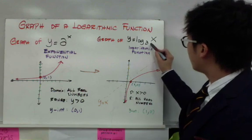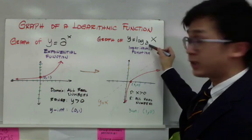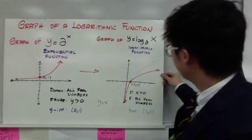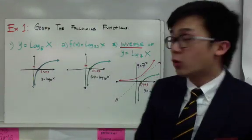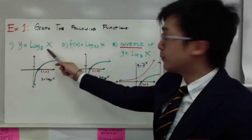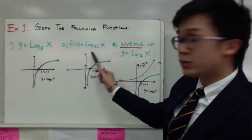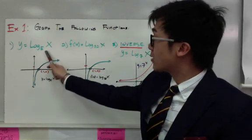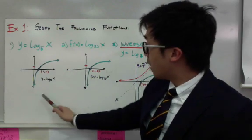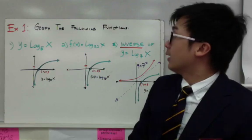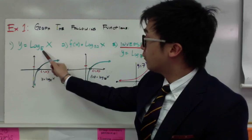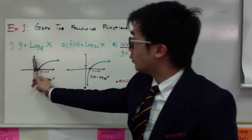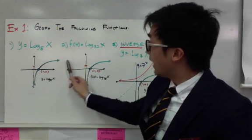Just like with the exponential function, if you change the value of your base a — it could be 1, 2, 3, or 283 — the behavior of the logarithmic graph will still be the same. This is true for the following examples: if I graph y equals logarithm of x base 5, f of x equal to logarithm of x base 32, and the inverse of logarithm of x base 7, they will all be related to each other. The graph of logarithm of x base 5 will have an x-intercept at (1, 0), domain of all positive x, and range of all real numbers.